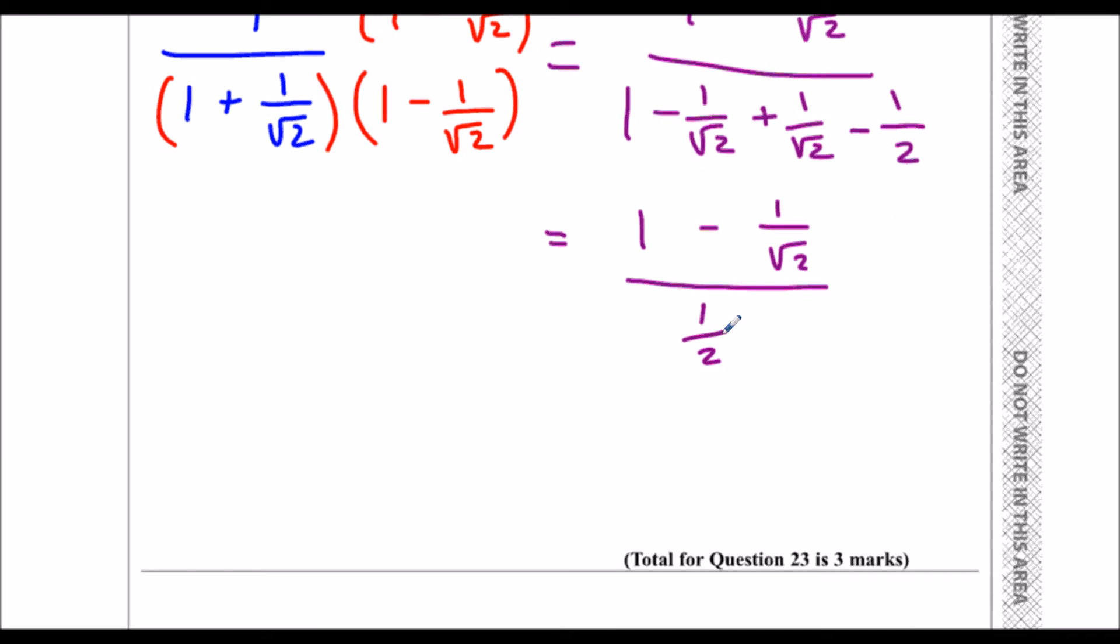Whenever I divide by 1 half, that's the same as multiplying by 2. So dividing by 1 half is the same as timesing by 2, so that's 2 lots of 1 minus 1 over root 2.